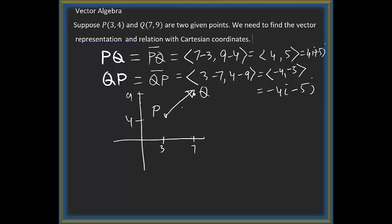This is the vector PQ, and that's 4i plus 5j. When you complete a right triangle, this length is 4, this length is 5, which is exactly the difference: 7 minus 3 is 4, 9 minus 4 is 5. This is your x-component, multiplied with i. i is the unit vector with length 1, and j is also a unit vector.